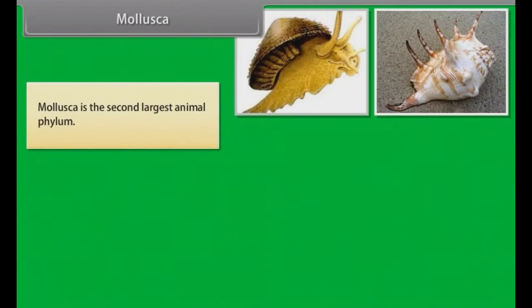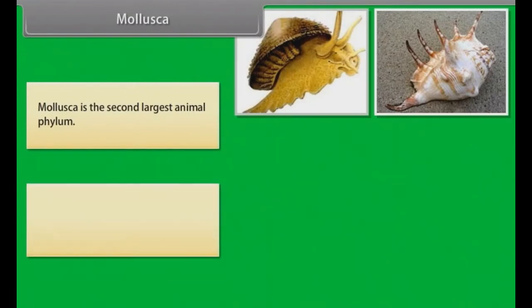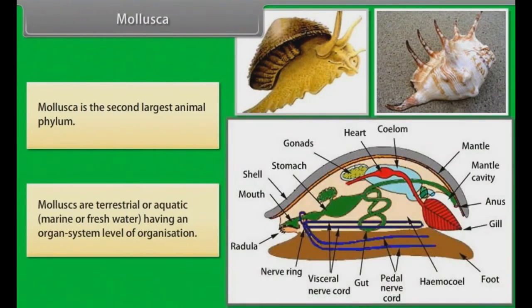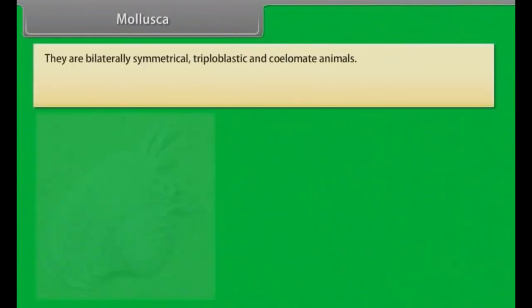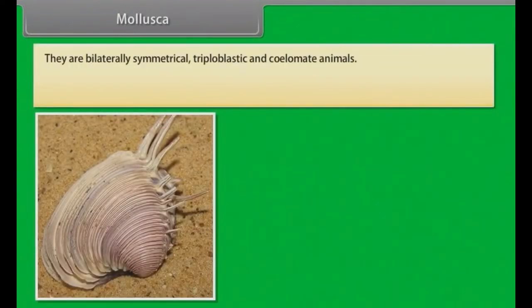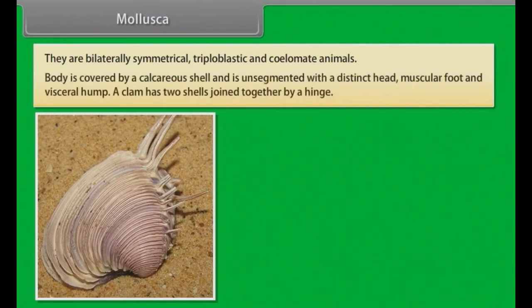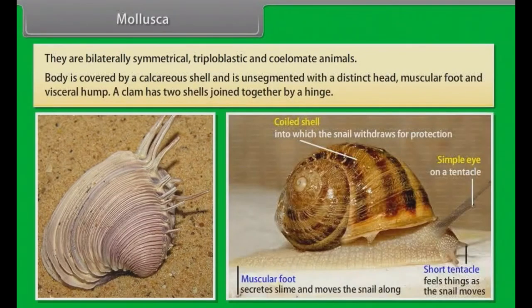Mollusca is the second largest animal phylum. Molluscs are terrestrial or aquatic — marine or freshwater — having organ system level of organization. They are bilaterally symmetrical, triploblastic and coelomate animals. The body is covered by a calcareous shell and is unsegmented with a distinct head, muscular foot and visceral hump.